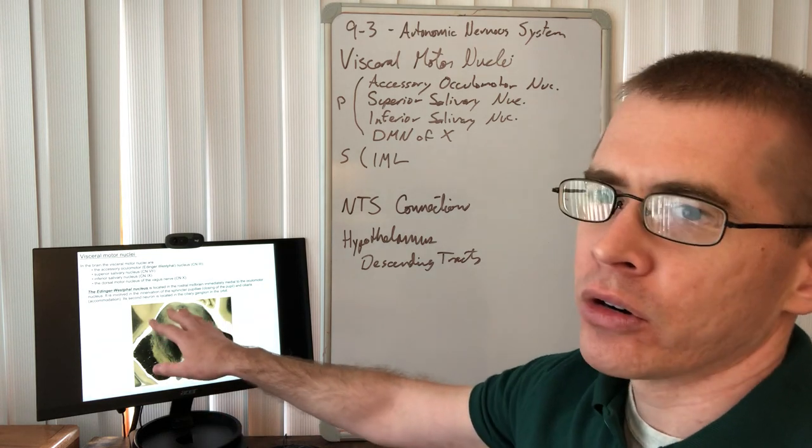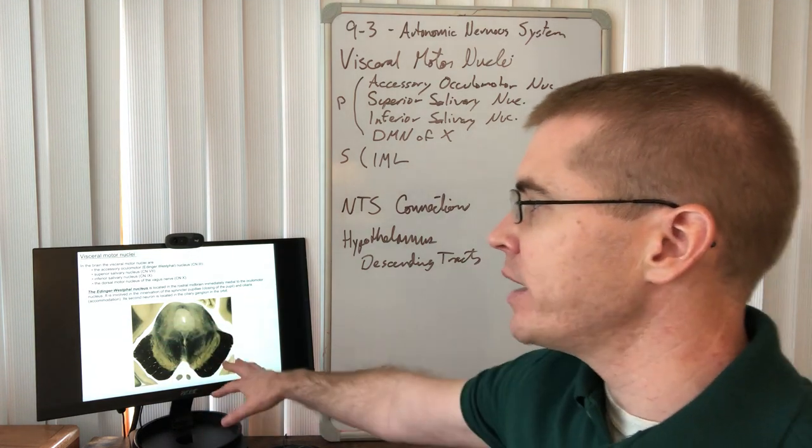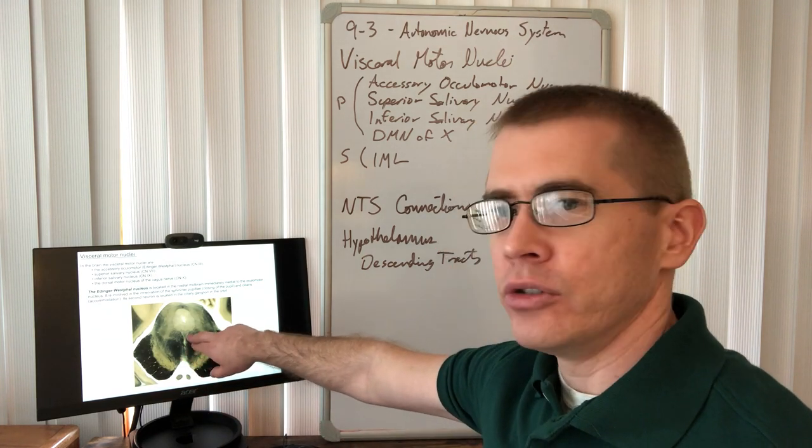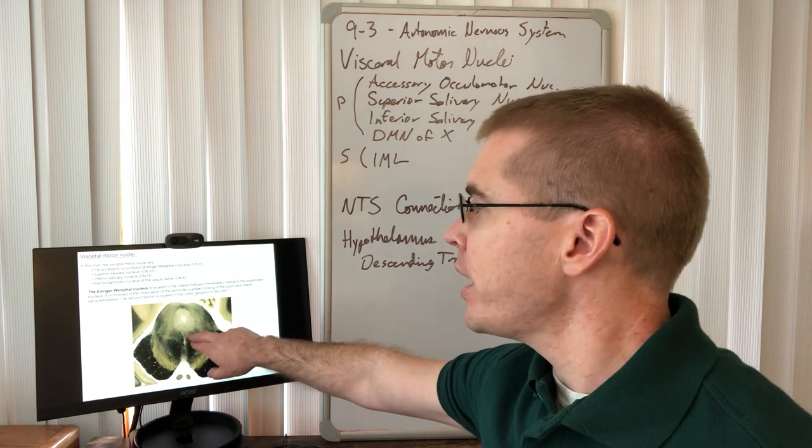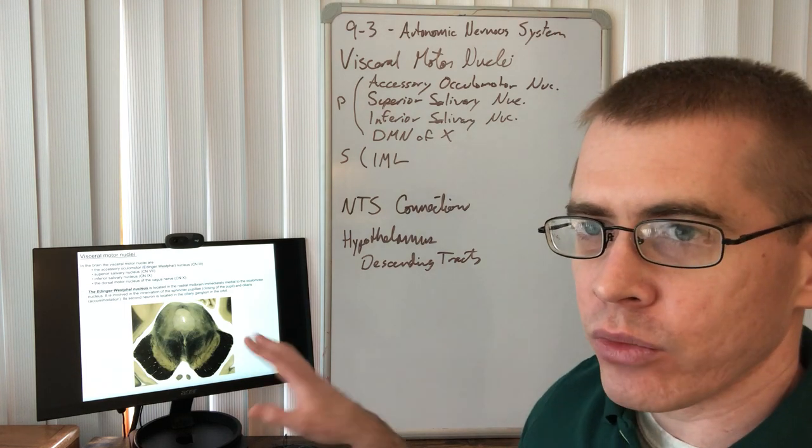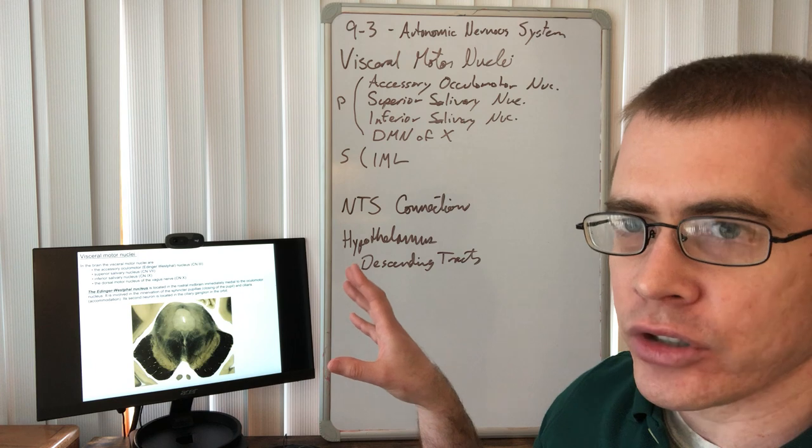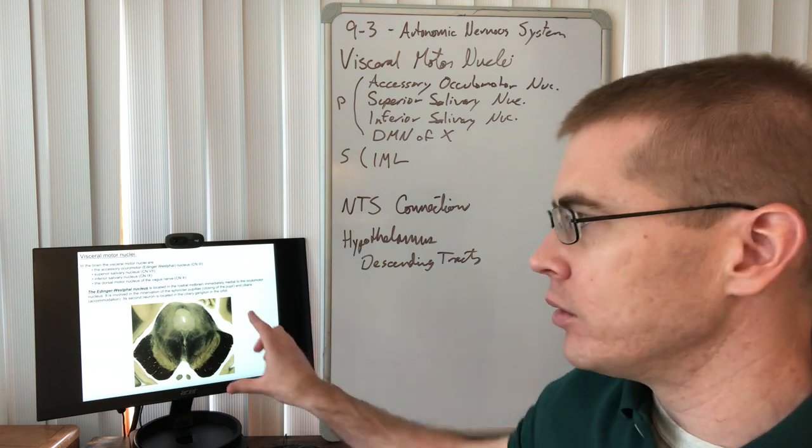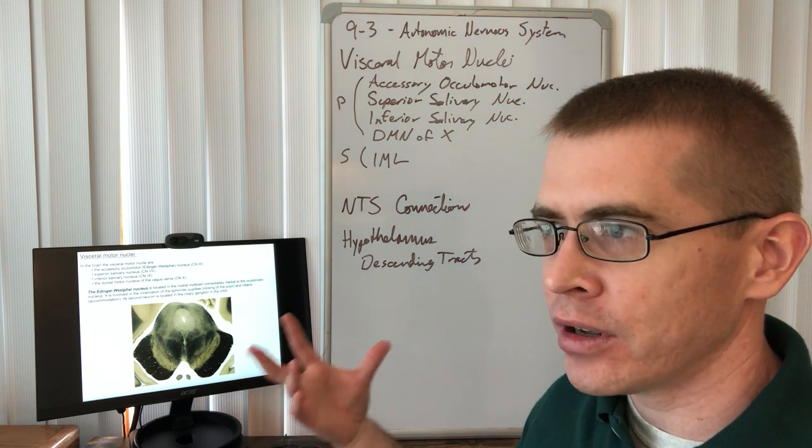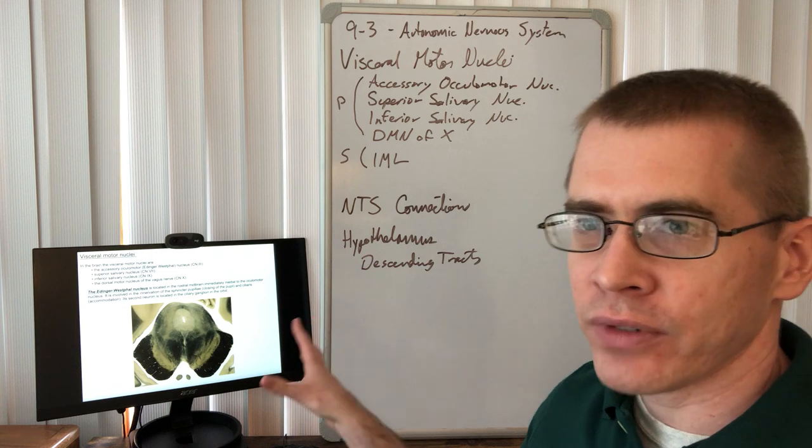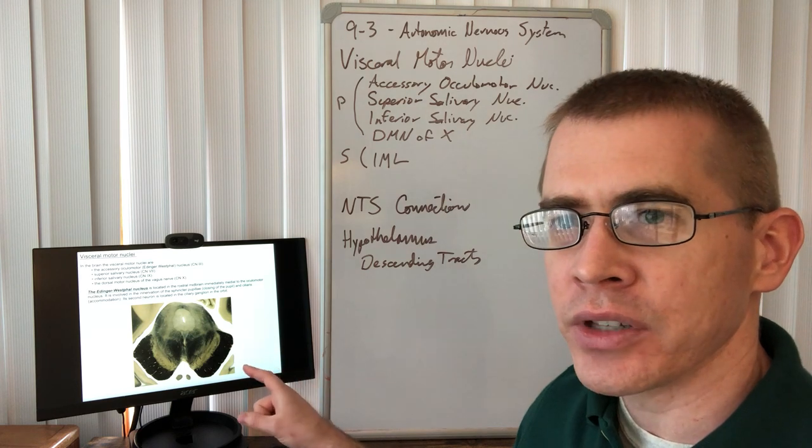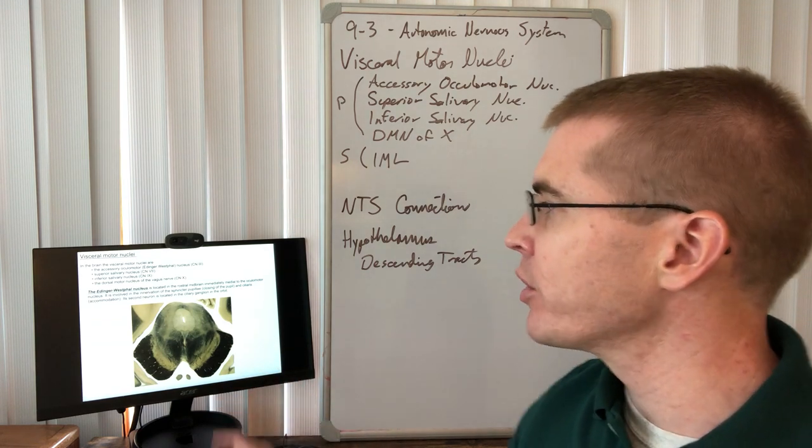The accessory oculomotor, also known as Edinger-Westphal nucleus, is located in the midbrain here. You can see we have the oculomotor nucleus here in the middle and the accessory oculomotor right next to it, closer to the periaqueductal gray. When I went through as a student in graduate school, I had to look at sections of all of these brain stems and brains and identify all these different structures. I'm not asking you to do that, but I still find value in looking at these and understanding their relation to each other in the brainstem.